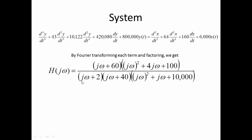In the denominator, we have a first order pole at 2 radians per second, a first order pole at 40 radians per second, and then a second order pole at the square root of 10,000, which is 100.